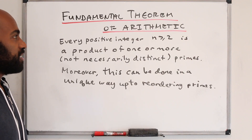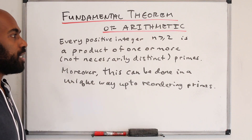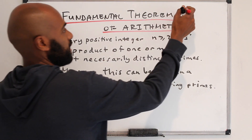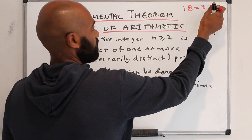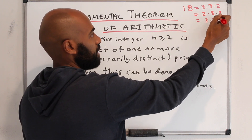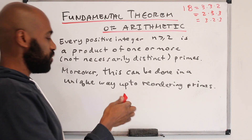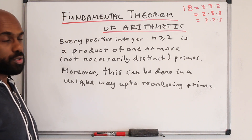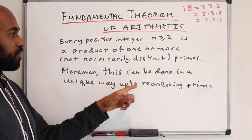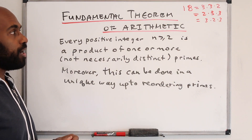The Fundamental Theorem of Arithmetic states: given any positive integer n ≥ 2, you can write n as a product of one or more primes, not necessarily distinct. For example, 18 can be written as 3 × 3 × 2. Moreover, this can be done in a unique way up to the reordering of the primes.